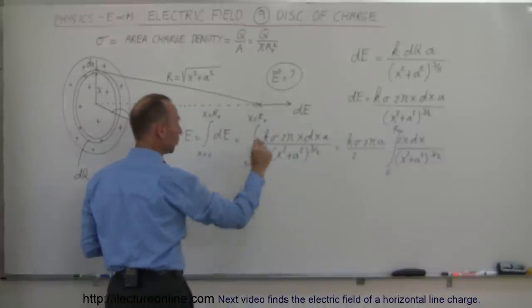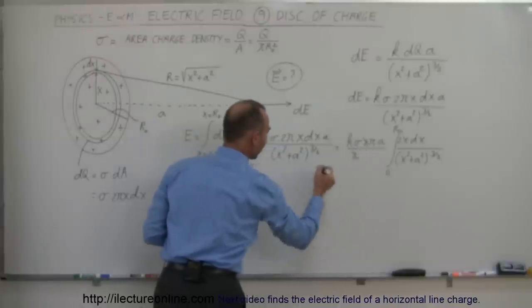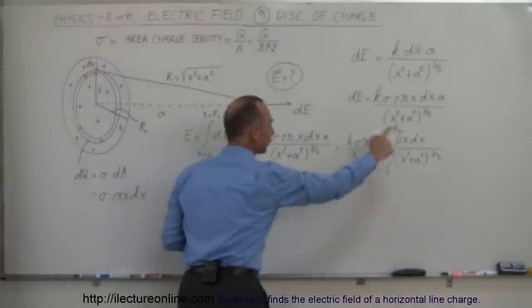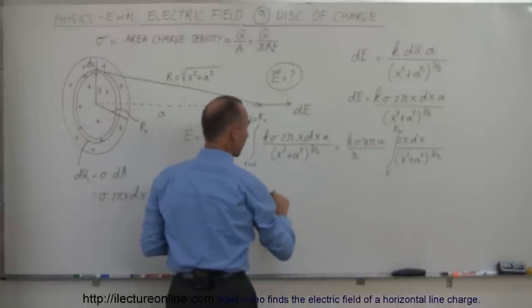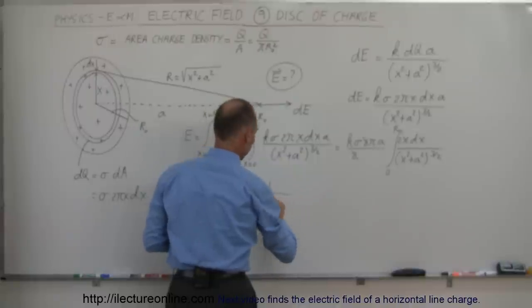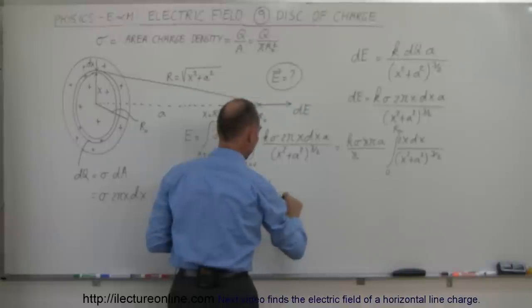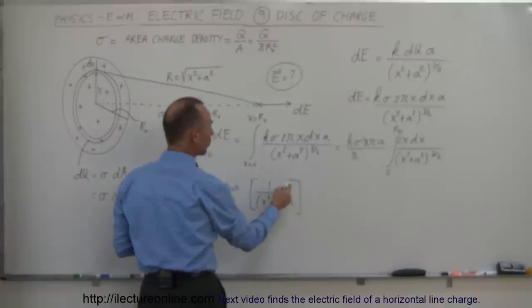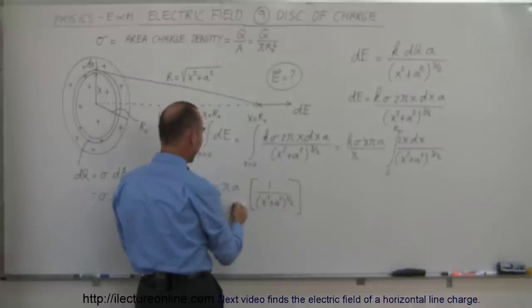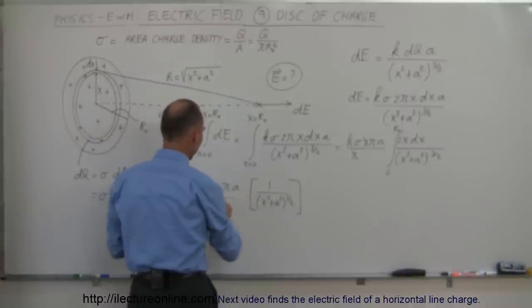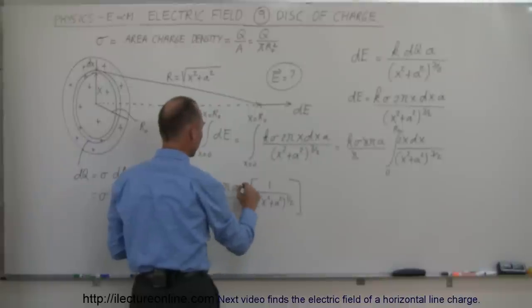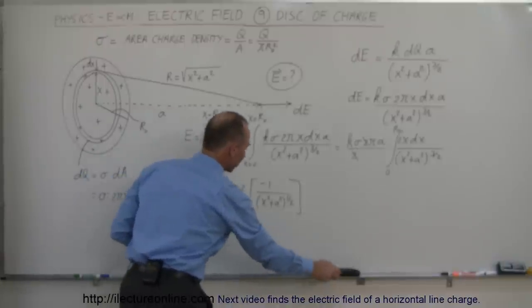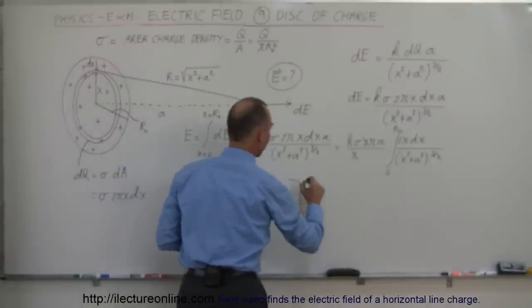The electric field E equals all those constants — and notice the two factors of 2 cancel — leaving K sigma pi A. Integrating gives 1 over the quantity X squared plus A squared to the 1/2 power. We also divide by the new exponent, which is minus 1/2; dividing by minus 1/2 brings a factor of 2 over and flips the sign. We then evaluate this from 0 to R-nought.